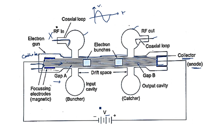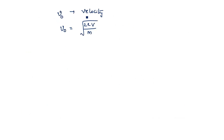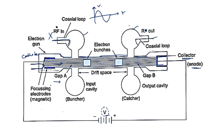So V0 equals the square root of 2eV/m, where V is the potential applied between the cathode and the anode, responsible for moving the electron across the klystron tube. The electron travels with this reference velocity V0 when there is no RF input. Now, coming to the case where the RF input is applied for amplification — the RF input is a radio frequency signal which is sinusoidal in nature, having both a positive peak and a negative peak.